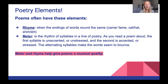Next we have meter. Meter is the rhythm of syllables in a line of poetry. As you read a poem aloud, the first syllable is unaccented or unstressed and the second is accented or stressed. The alternating syllables make the words seem to bounce.